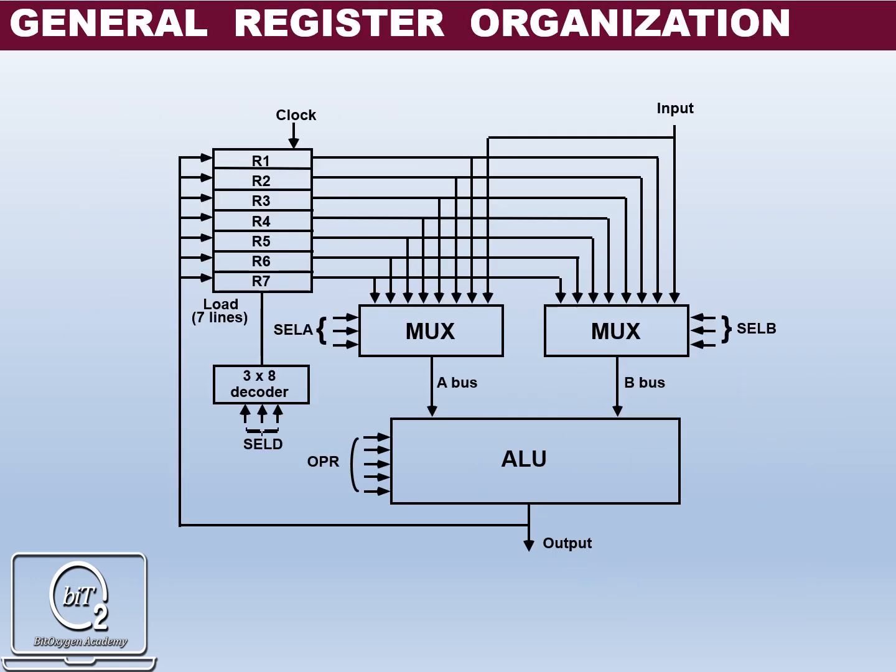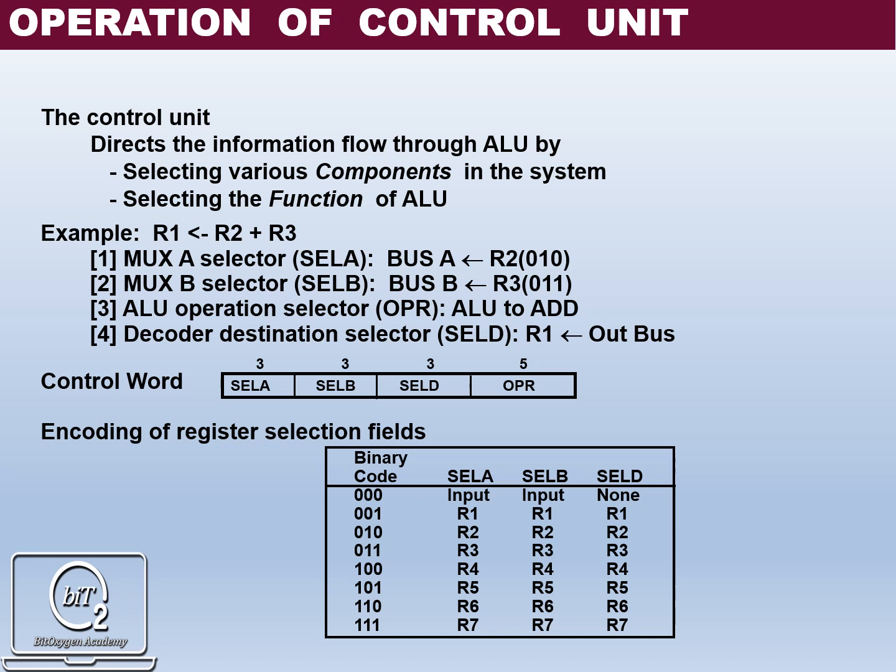In this diagram, the output of each register is connected to two multiplexers. The selection lines, selector A and selector B, in each multiplexer select one register or the input data. Two buses, bus A and bus B, form the inputs to the ALU. ALU performs arithmetic or logical micro operation. The result transfers into the inputs of all registers. The register that receives information from the output bus is selected by a decoder.